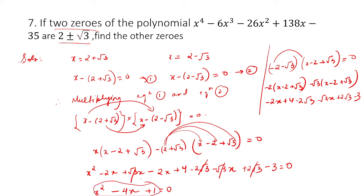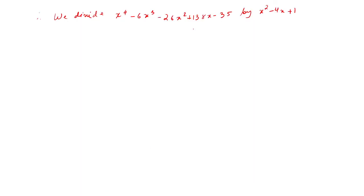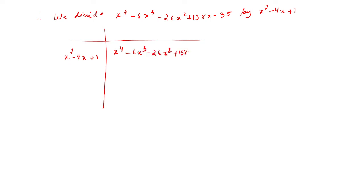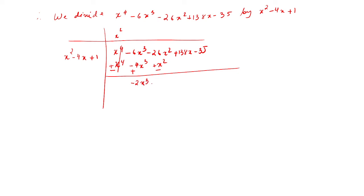We try solving x squared minus 4x plus 1 using the quadratic formula. In the long division: multiply x squared by x squared to get x to the power 4, minus 4x into x squared gives minus 4x cubed, plus x squared. Then cancel — minus 6x cubed plus 4x cubed gives minus 2x cubed. This minus 26x squared minus x squared becomes minus 27x squared. Bring down 138x and minus 35.